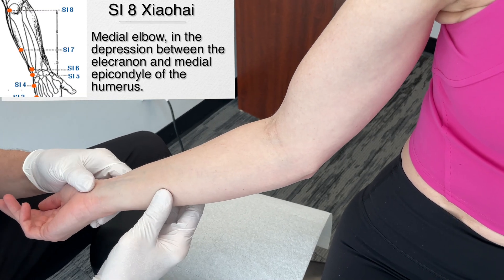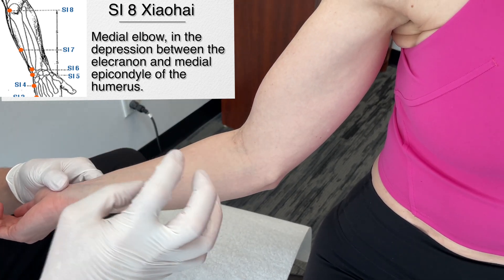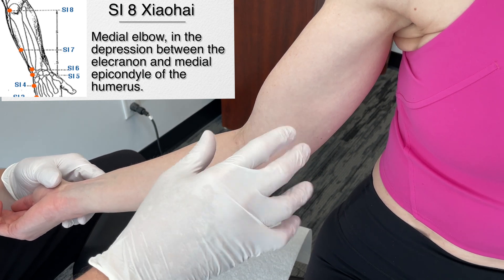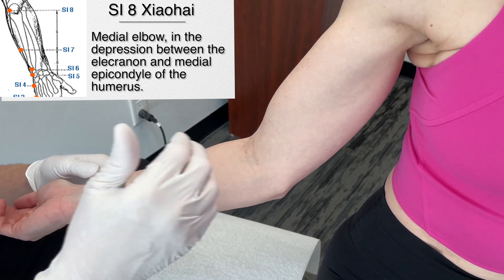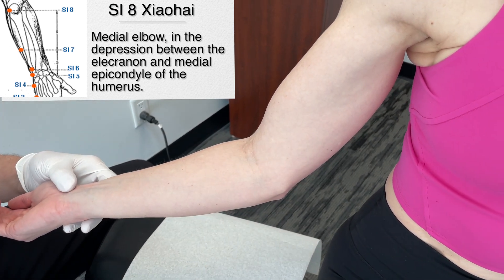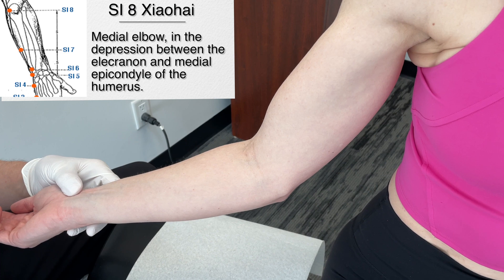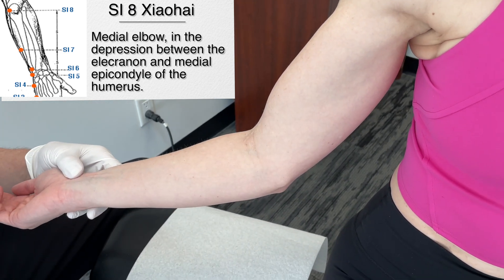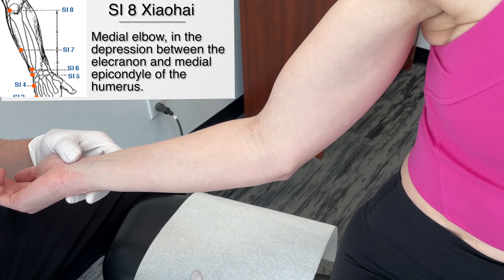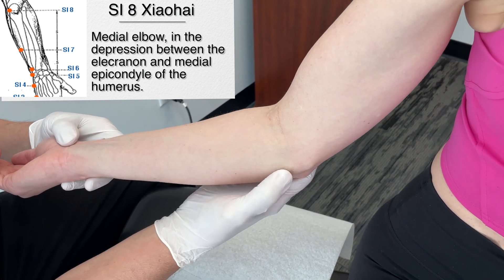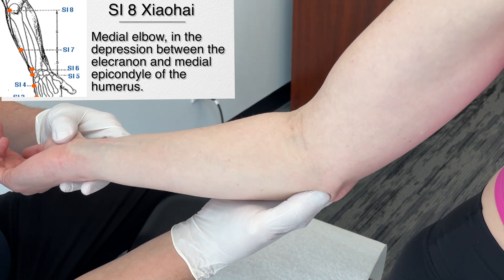For the next point we're going to use Small Intestine 8, on the medial side of the elbow. You may be asking how treating fascial expansions around the jaw could involve getting on the elbow. Well, we're getting into the fact that there are really thick, increased neurological receptors in this area, and one area definitely will affect the entire body. After hundreds of years of treatment in traditional Chinese medicine, they know this is actually a very effective way to address these problems. The location is on the medial aspect of the elbow, in the depression between the olecranon process of the ulna and the medial epicondyle of the humerus.